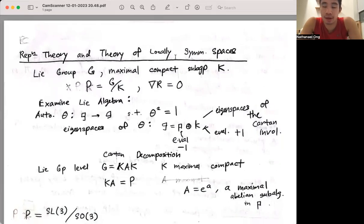Suppose we have a Lie group G and its maximal compact subgroup K. Taking the quotient of G by K gives me the locally symmetric space P, in which the covariant derivative of the Riemann curvature tensor vanishes at each point.